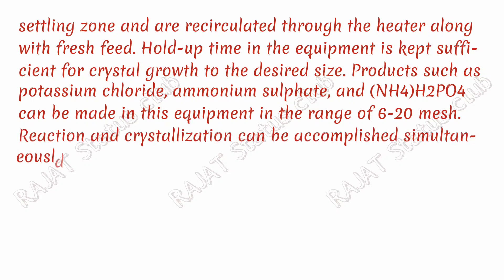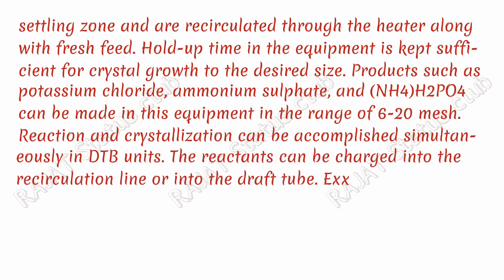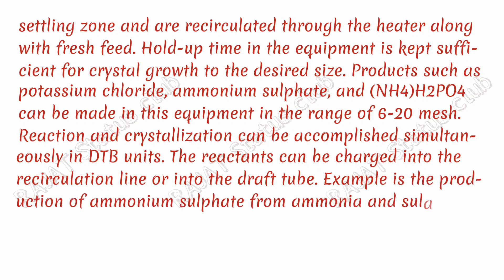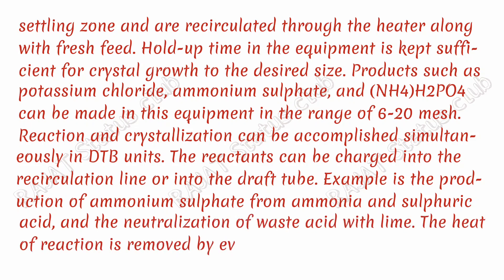Reaction and crystallization can be accomplished simultaneously in DTB units. The reactants can be charged into the recirculation line or into the draft tube. An example is the production of ammonium sulfate from ammonia and sulfuric acid, and the neutralization of waste acid with lime. The heat of reaction is removed by evaporation of water.